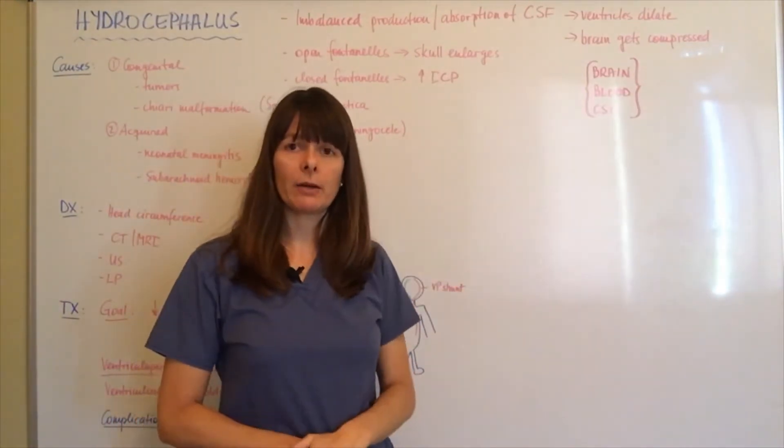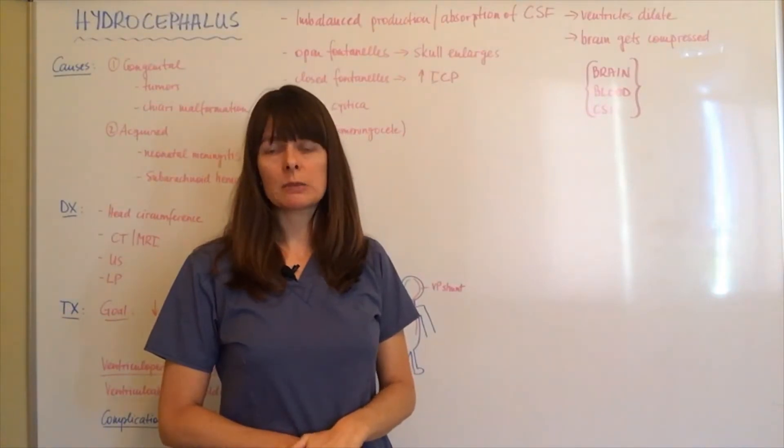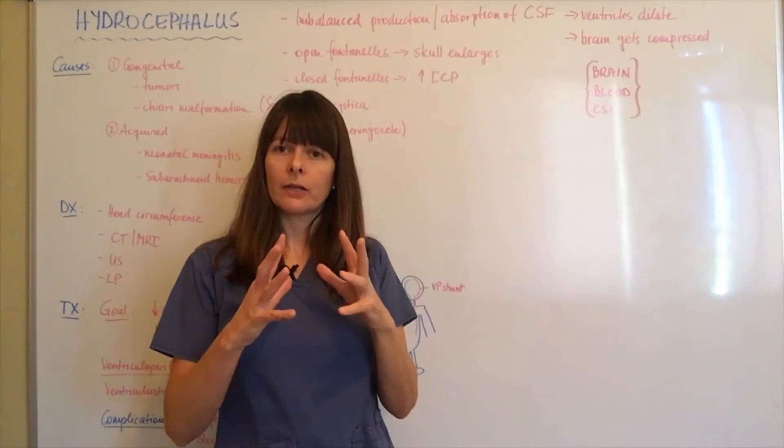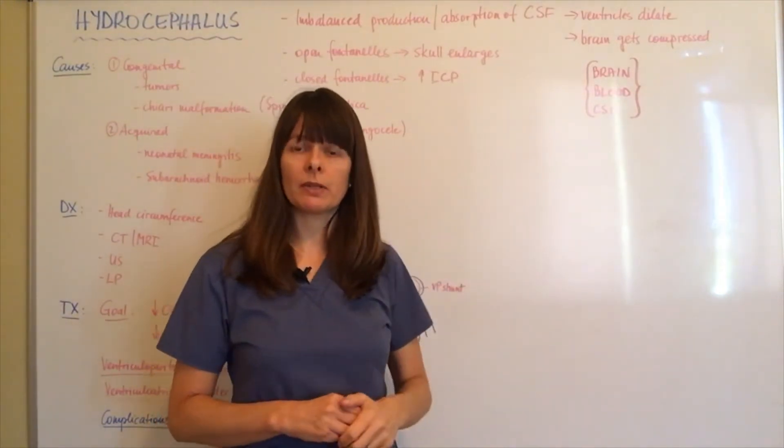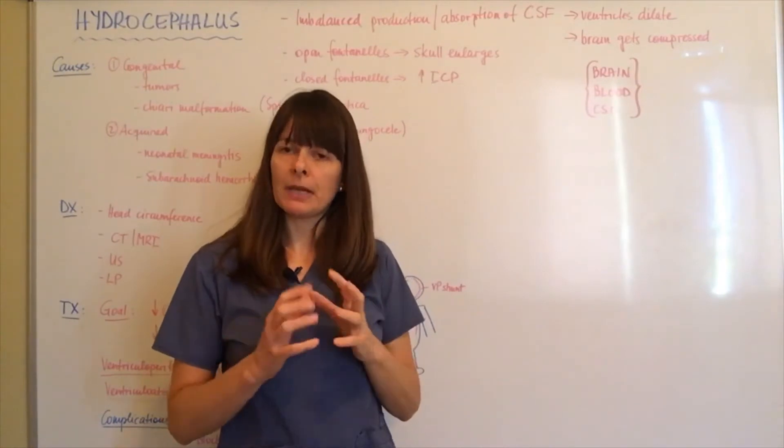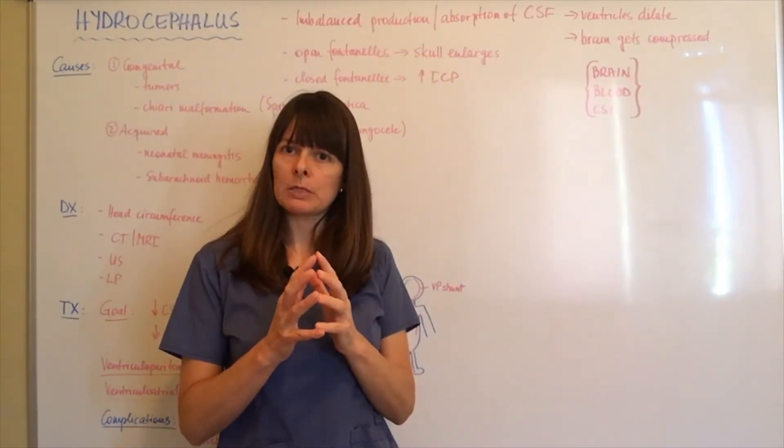But when there's increased production of cerebral spinal fluid, there's an imbalance between these three structures or compartments within the brain. Something has to give, and if the cerebral spinal fluid gets larger and larger, the brain gets compressed against the skull.